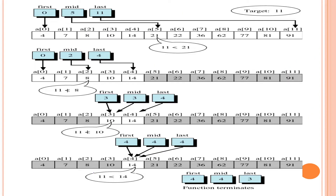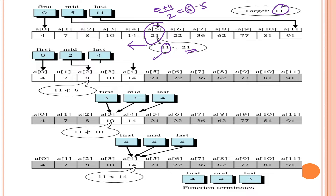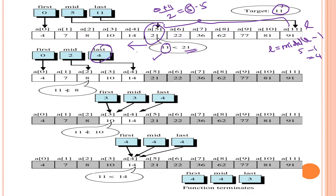Now a second example: target value is 11. We calculate the middle element as before: 0 plus 11 divided by 2 equals 5.5, floor value is 5. We compare 11 with the element at index 5, which is 21. Since searching value 11 is less than 21, the element may be in the left side of the middle. So we update the last index to middle minus 1: 5 minus 1 equals 4.